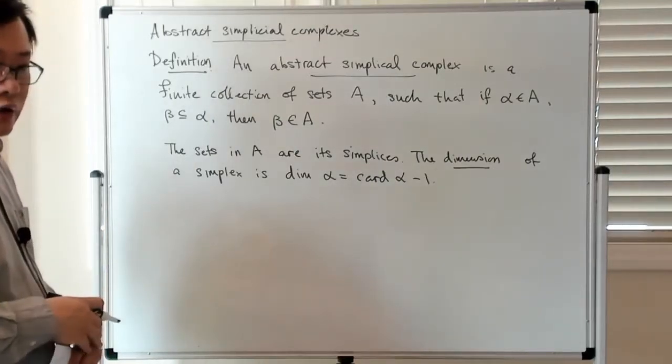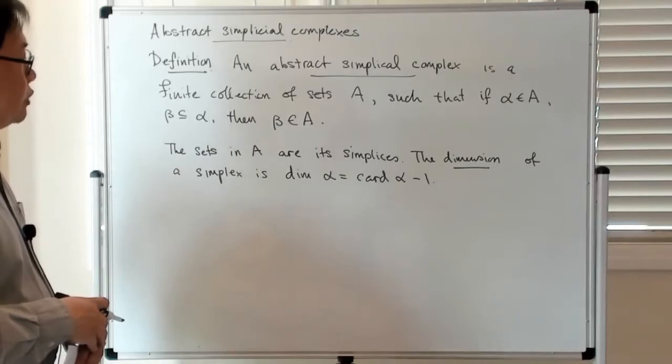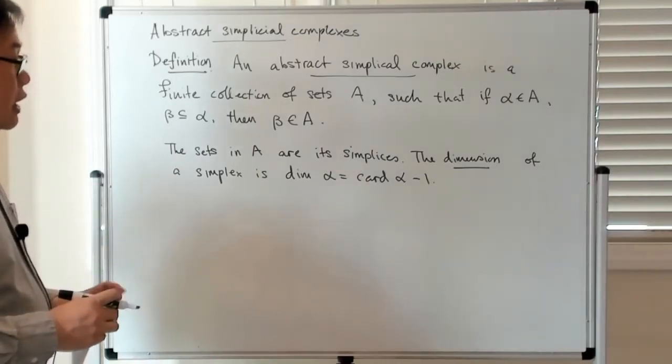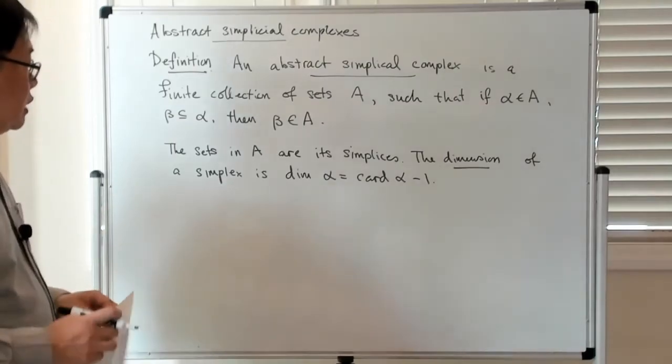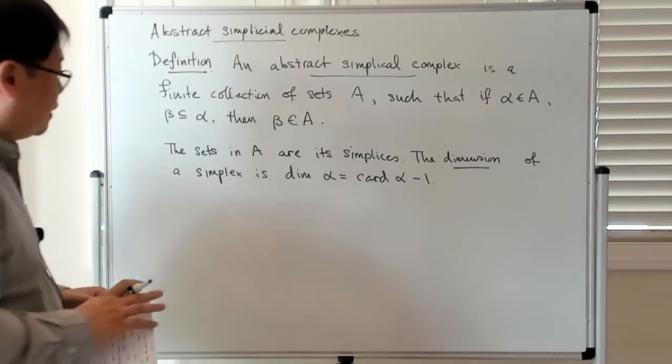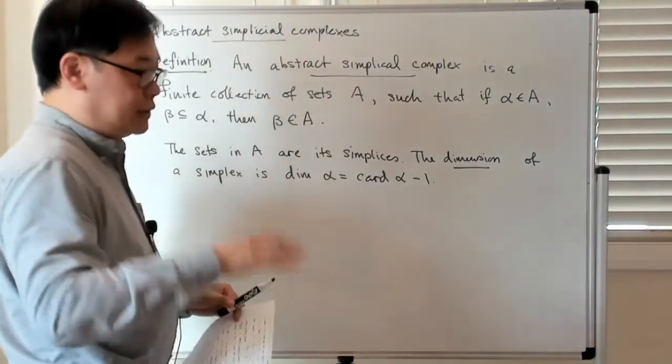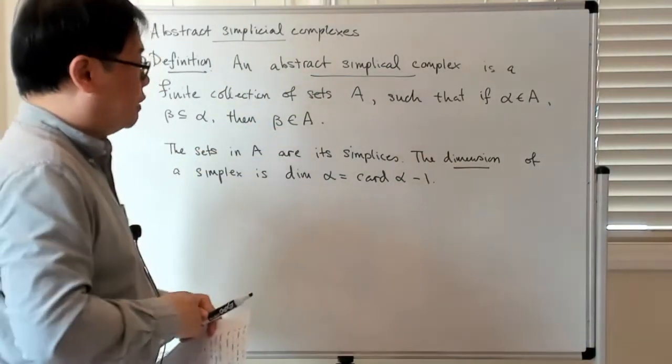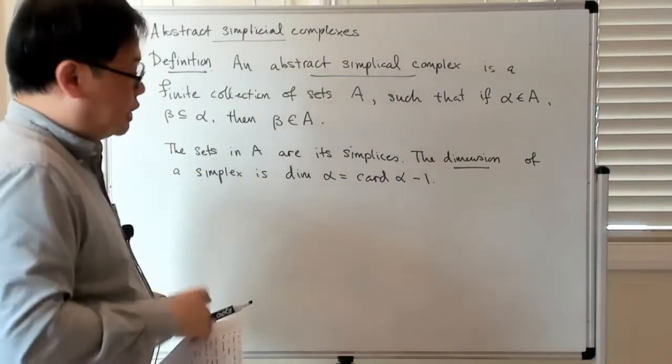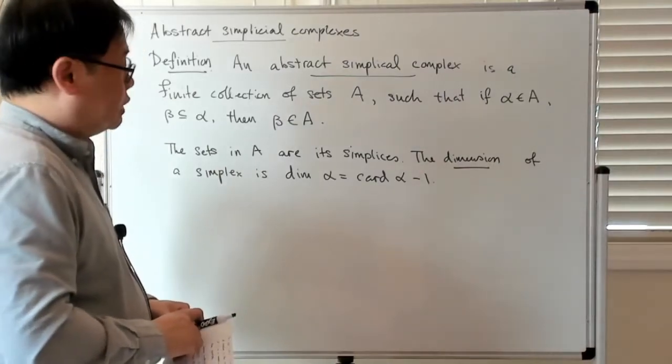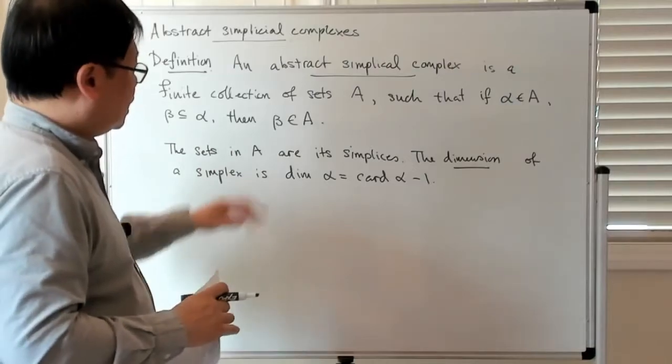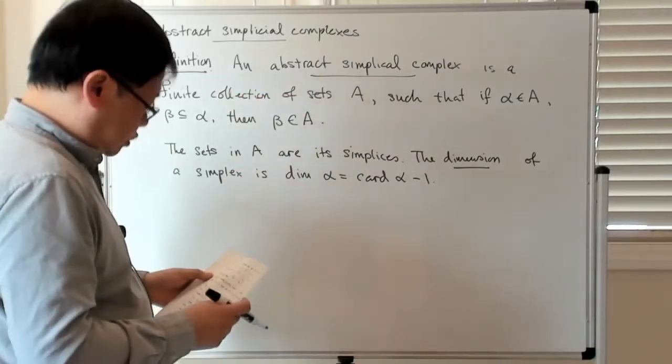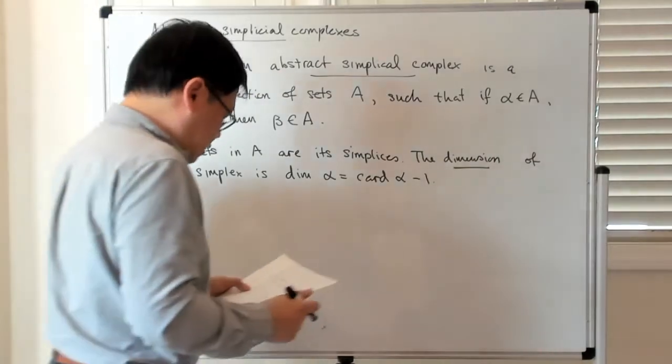In a geometric realization of a simplicial complex, the simplicies are the convex hull of k plus one points. You should think of the points as being the vertices. Then you take collections of points, and they span some simplex, but if you think of the set of those points, that's going to be one of these sets in the abstract simplicial complex.